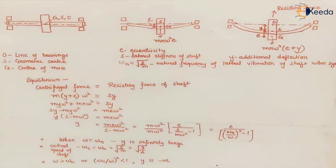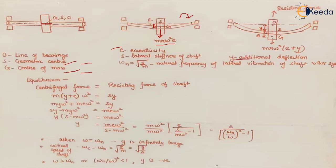Whenever there is a rotor mounted on a shaft, the center of mass denoted by G and the geometric center do not coincide with point O, which is the center of the shaft centerline. When the shaft starts rotating, it is subjected to centrifugal force because of the distance between the geometric center and center of mass, which we denote by e, also called eccentricity. This causes more deflection over time, denoted by y, the additional deflection. In equilibrium, the centrifugal force equals the resisting force of the shaft, which acts as the restoring member.